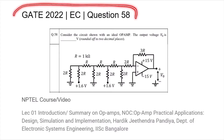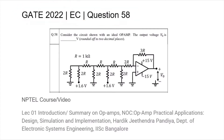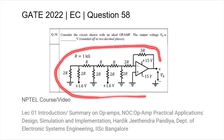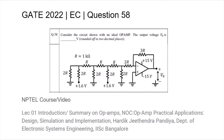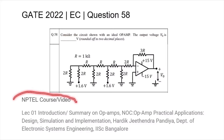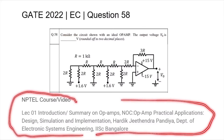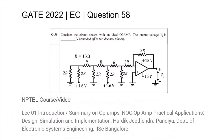This is question 58 from the GATE 2022 EC paper, where we are given an op-amp circuit and asked to find the value of the output voltage V_out. Underneath the question you will find the title of the NPTEL course or video relevant to this topic.